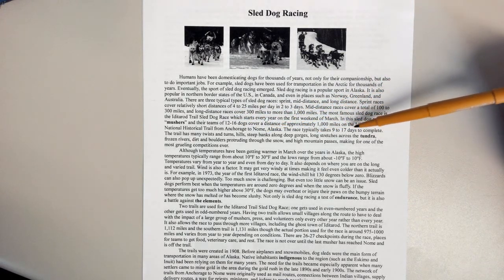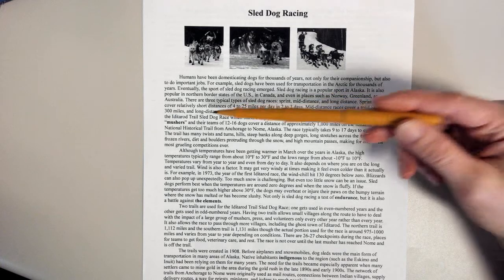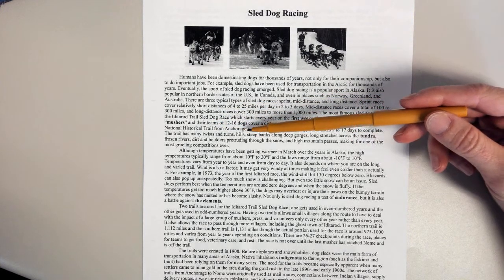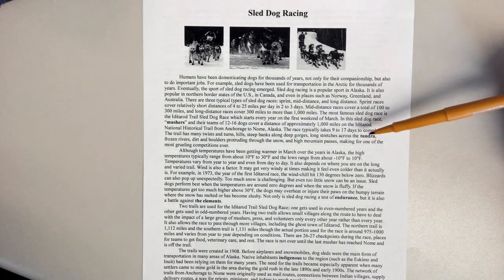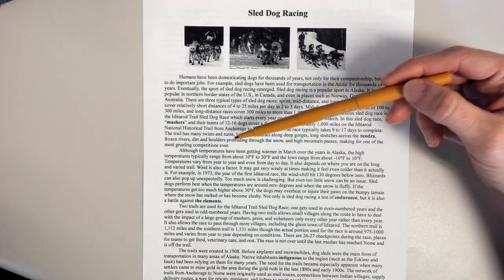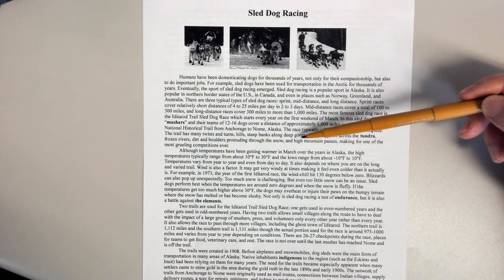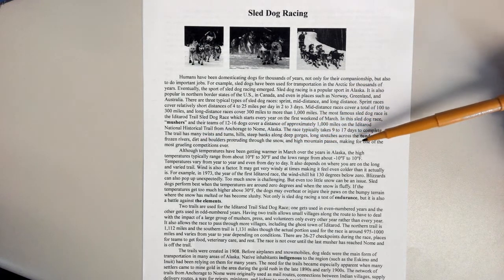The race typically takes nine to 17 days to complete. The trail has many twists and turns, hills, steep banks along deep gorges, long stretches across the tundra, frozen rivers, dirt and boulders protruding through the snow, and high mountain passes, making for one of the most grueling competitions ever.